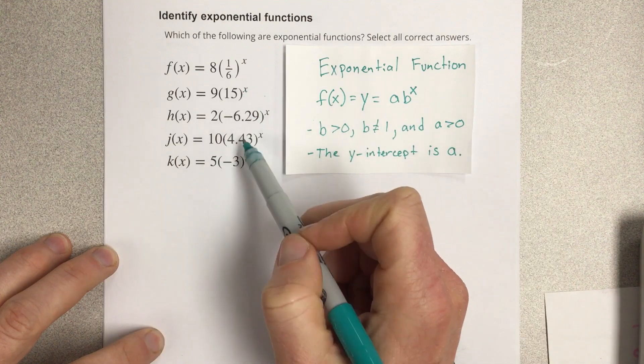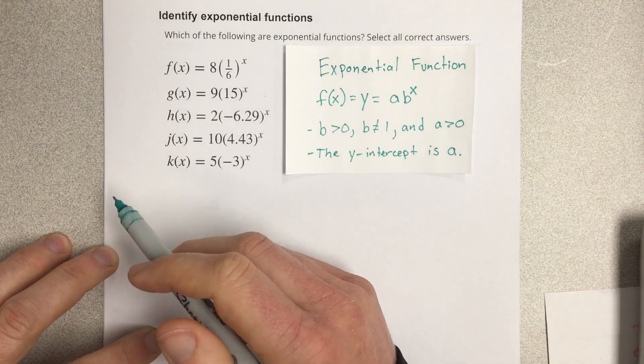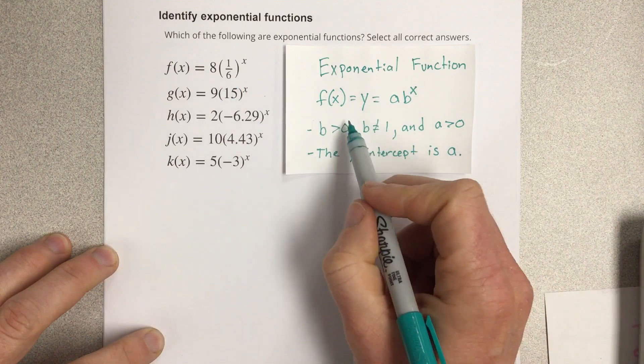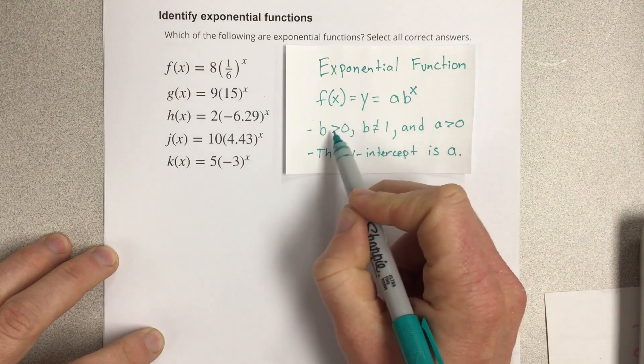We're going to go through and take a look at the b value first and make sure that the b value satisfies these two pieces of criteria.